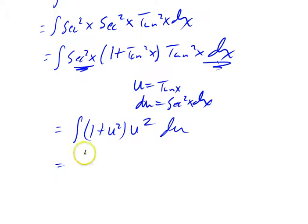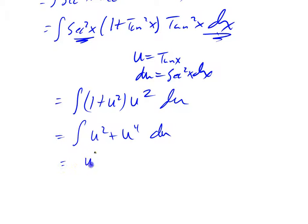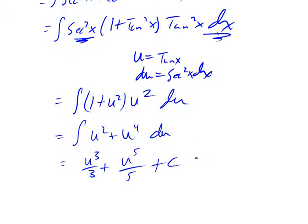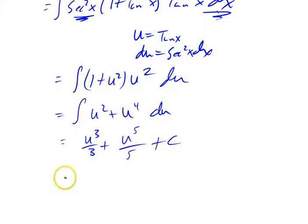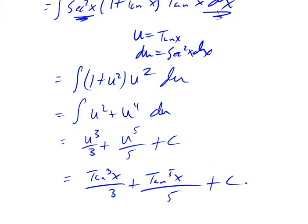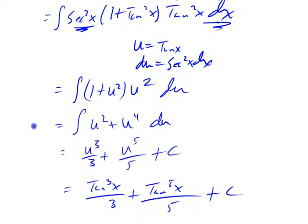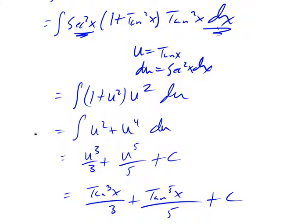This becomes the integral of (1 plus u²) times u² du, since u is tangent x. Distributing, that's u² plus u⁴ du, which integrates to u³/3 plus u⁵/5 plus a constant. Substituting back with u equals tangent x: tangent cubed x over 3 plus tangent to the fifth x over 5 plus C. With the power of secant being even, you split off two of them, and the remaining even number can be converted into 1 plus tangent squareds.